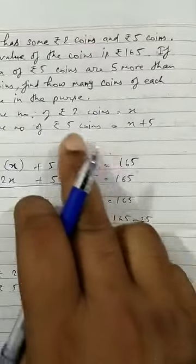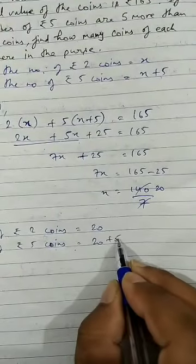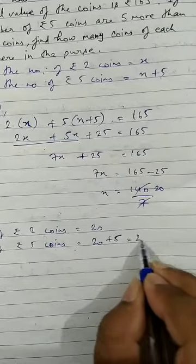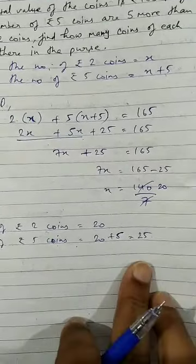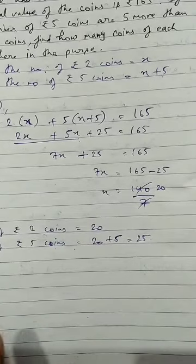And number of rupee 5 coins was X plus 5 so we can write here 20 plus 5 that is 25.